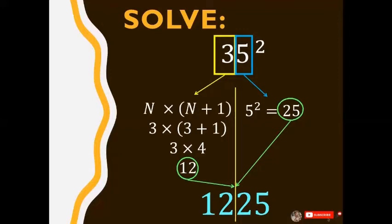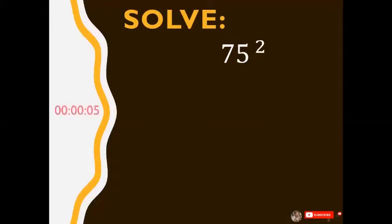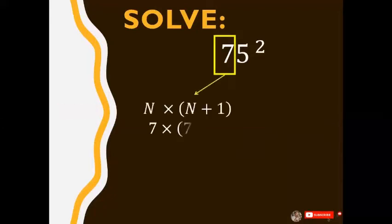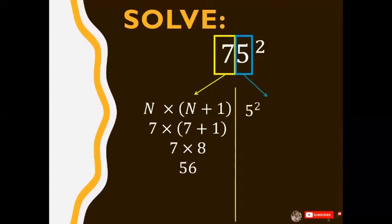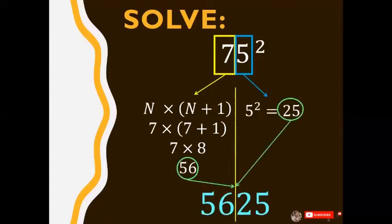Are you ready for the next problem? Solve for 75 squared in 5 seconds. Time's up. Remember, 7 plus 1 is 8 times 7 is 56, and it's combined with 25. So that's 5625.